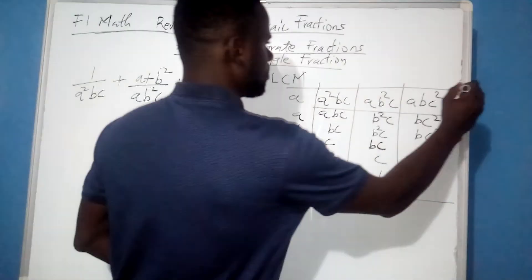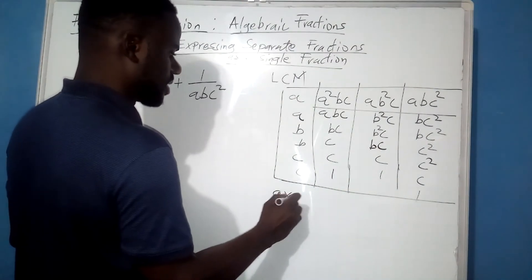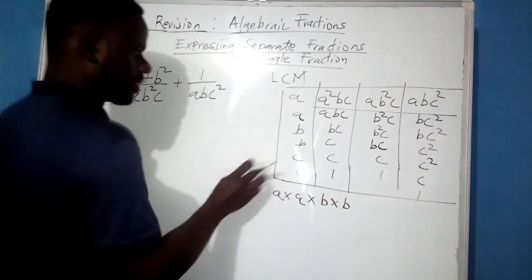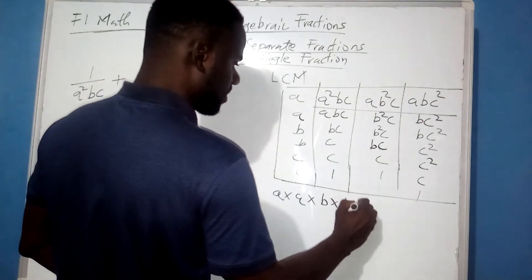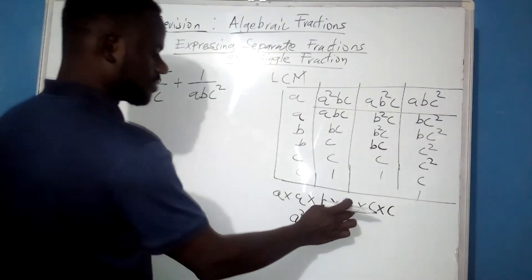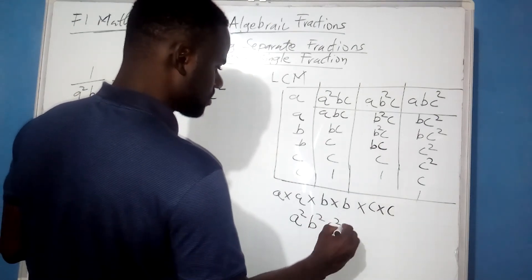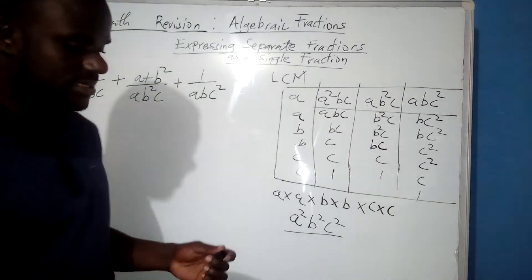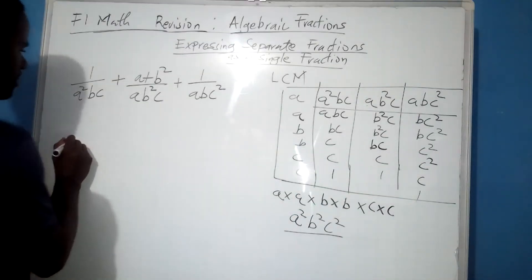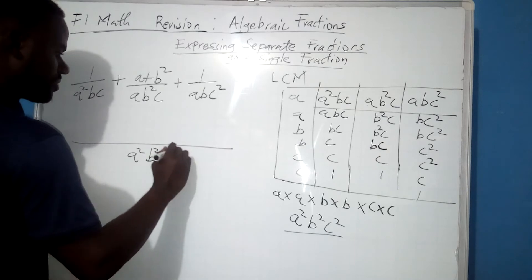Now in order to get the entire LCM, we simply need to multiply these together. A times A, then B times B, and finally C times C. A times A is the same as A squared. B times B is the same as B squared. And C times C is also the same as C squared. That is how we get the LCM of this fraction. So the LCM is A squared, B squared, and C squared.